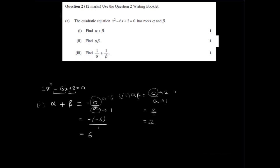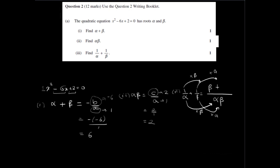Part 3 is a slightly harder question. It's asking us to find 1 on alpha plus 1 on beta. Putting that under a common denominator of alpha times beta, we get beta plus alpha in the numerator over alpha beta. The numerator is the sum of the roots, which we know from part 1 is 6, and the denominator is the product of the roots, which we know from part 2 is 2. So the answer is 6 on 2, which is 3.